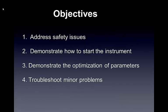Before we get started, we want to outline some of the main objectives for this lesson. First, we're going to look at some of the safety issues associated with using an atomic absorption spectrophotometer. Then we're going to demonstrate how to start the instrument up, optimize key parameters for atomic absorption, and troubleshoot minor problems that may crop up during its application.